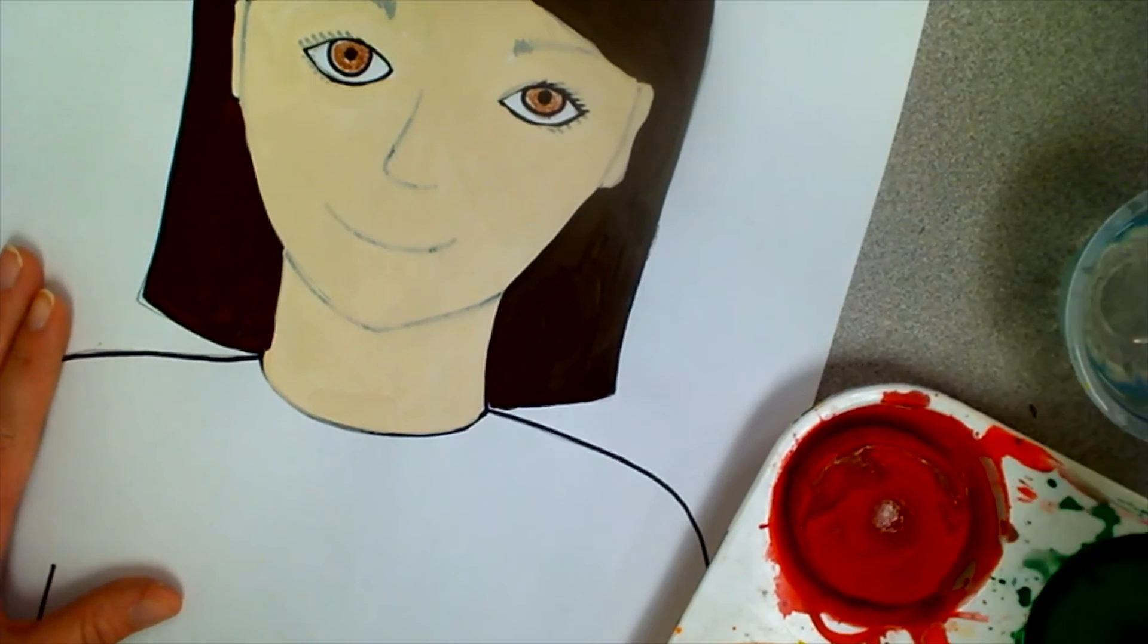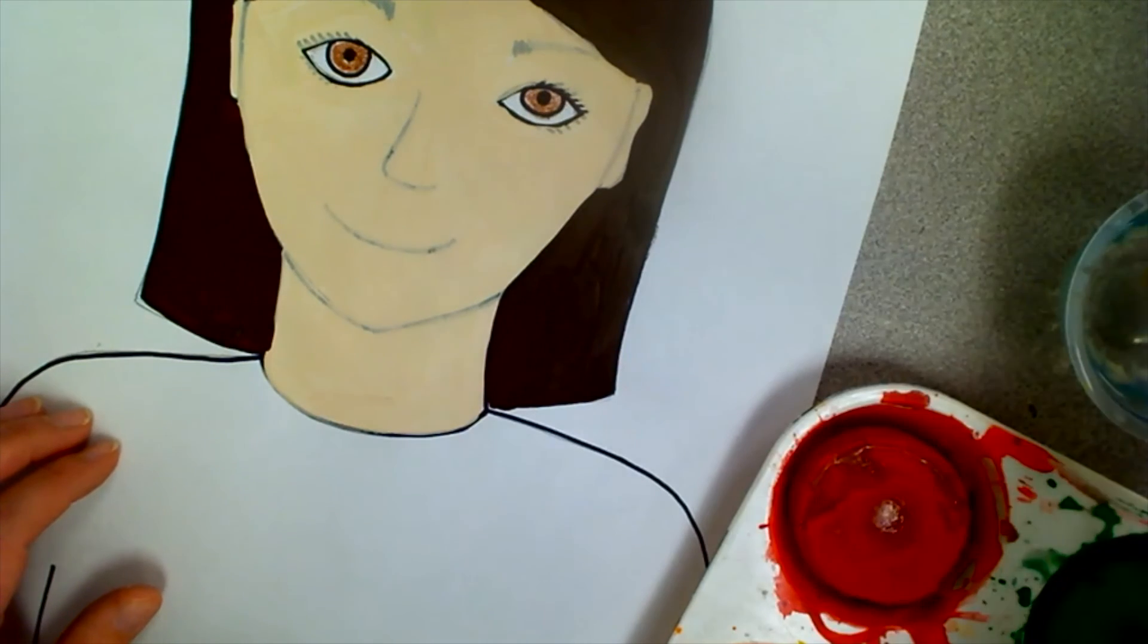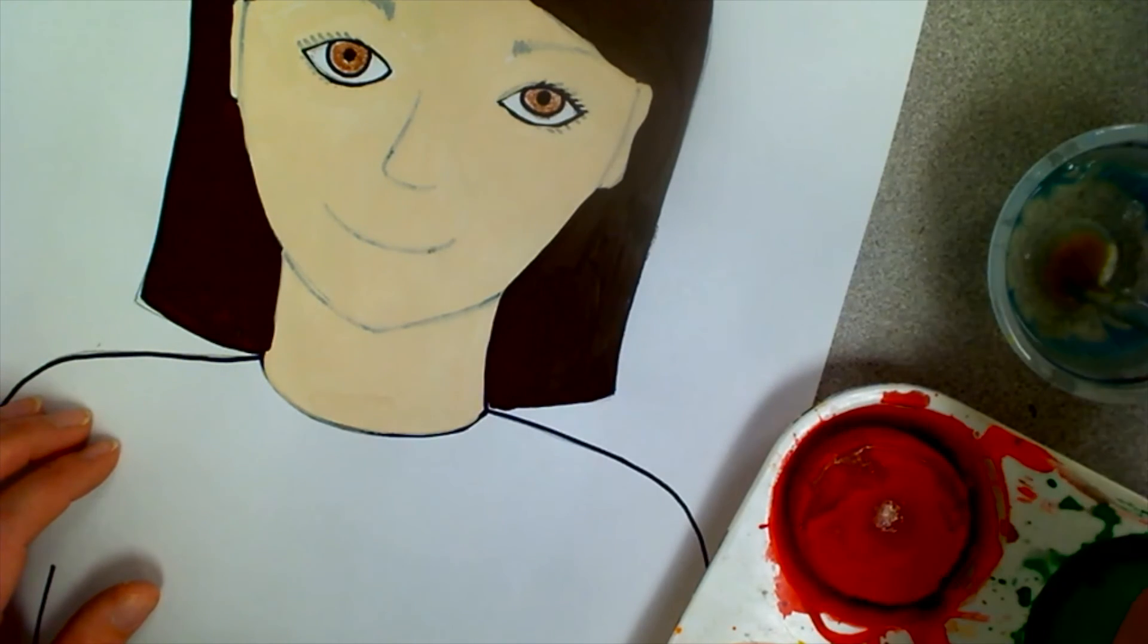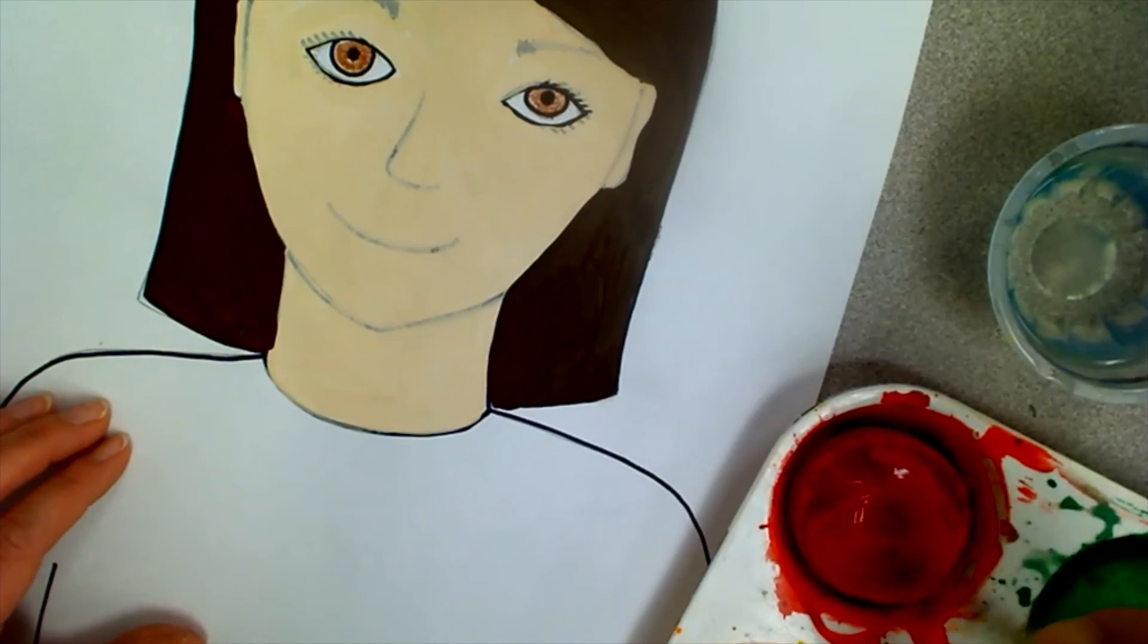When you're using tempera cakes, it's different than using liquid tempera paint. You have to make sure that you get your brush wet first and you swirl your brush around in the paint. The more you swirl, the darker your color will be. The less you swirl, the lighter your color will be.